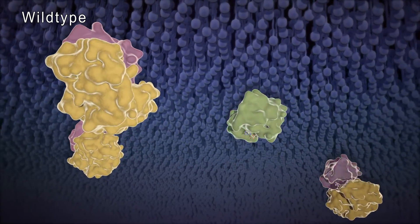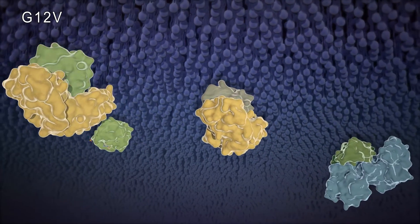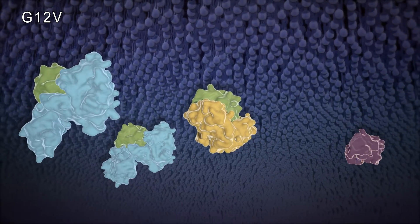With mutant Ras, however, more than 50% of Ras proteins are bound to GTP at a given time.